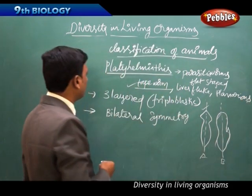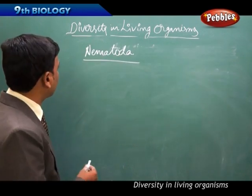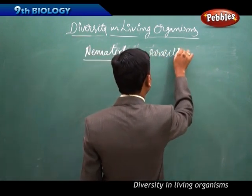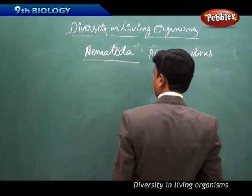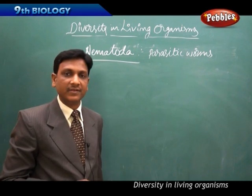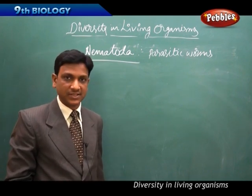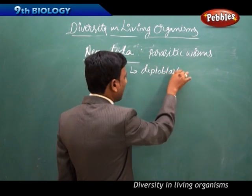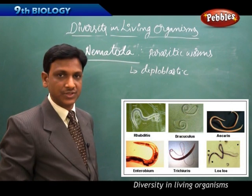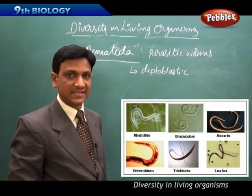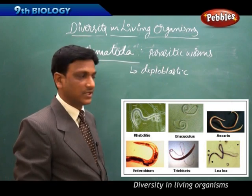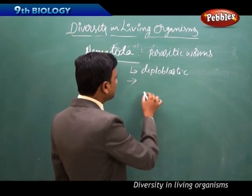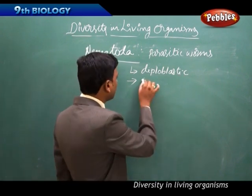The next phylum is Nematoda. Like Platyhelminthes, these are parasitic worms, but unlike the flat worms of Platyhelminthes, Nematoda worms are cylindrical. They are triploblastic — having three layers of cells that can differentiate into tissues — but they have no true organ system inside.